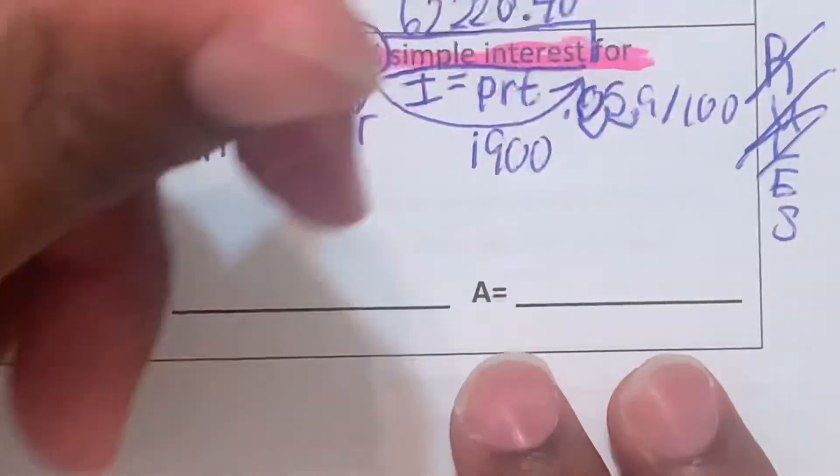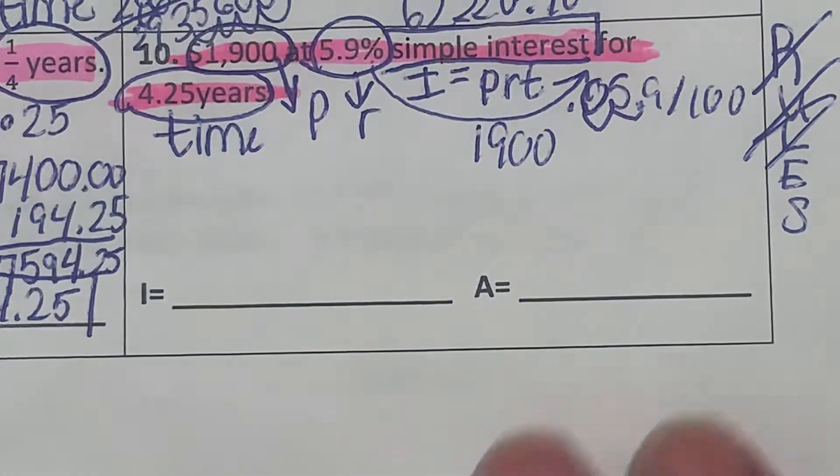We're going to multiply this by 1,900. We read the word problem, we underlined the question, we labeled and annotated. So now let's do 1,900 multiplied by .059.